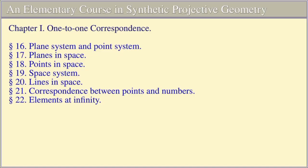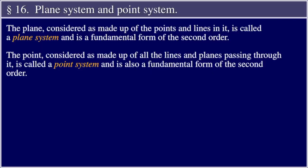An Elementary Course in Synthetic Projective Geometry by Derek Norman Lamer, Chapter 1 Continued: 1-to-1 Correspondence. Section 16, Plane System and Point System. Section 17, Planes in Space. Section 18, Points in Space. Section 19, Space System. Section 20, Lines in Space. Section 21, Correspondence Between Points and Numbers. Section 22, Elements at Infinity.